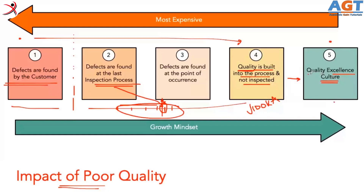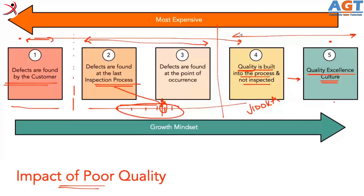Quality excellence culture means the defect should be controlled as early as possible. Or better yet — why do we need to think about defects at all? We have to think about making the right quality. How do we make sure we make right quality instead of stopping bad quality? The first two scenarios are about finding defects — one internally, one externally. But in the quality excellence phase, we ask: why think about making defects? Think about how to make the right product. Quality is built into the process and not inspected — if our processes are right, we will be making good quality products.